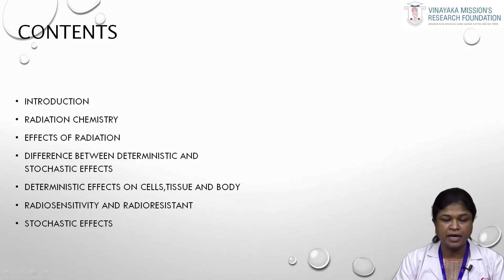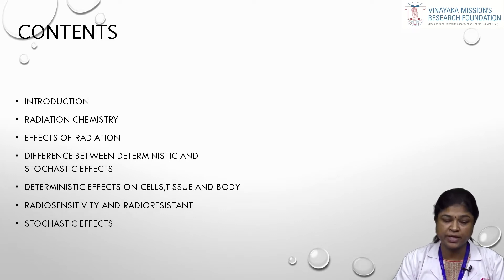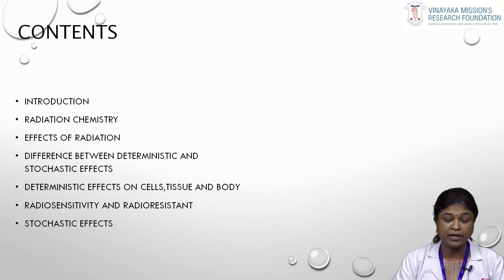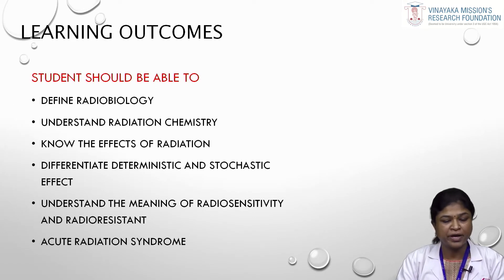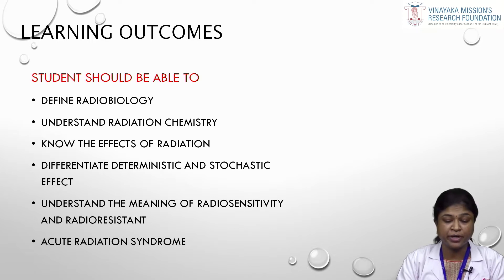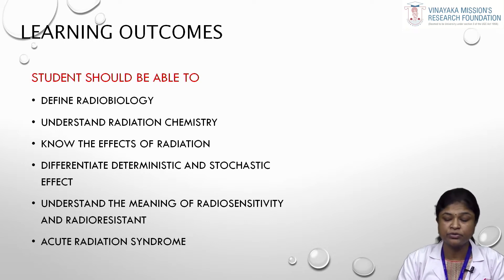I will be dealing with the following contents: introduction, radiation chemistry, effects of radiation, difference between deterministic and stochastic effects, deterministic effects on cells, tissues and body, understanding of radiosensitivity and radioresistance, and stochastic effects. By the end of the lecture, the student should be able to define radiation biology, understand radiation chemistry, know the effects of radiation, differentiate between deterministic and stochastic effects, and understand radiosensitivity, radioresistance, and acute radiation syndrome.